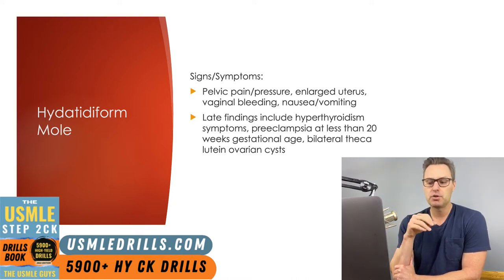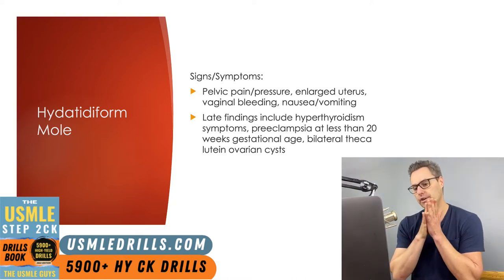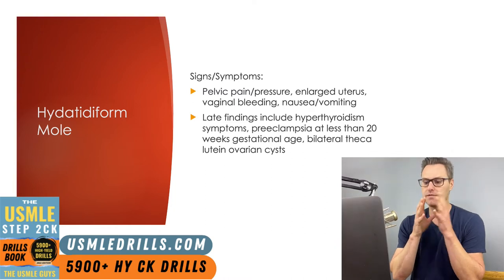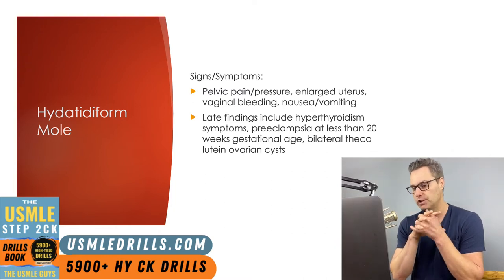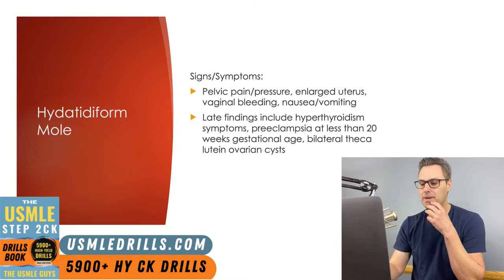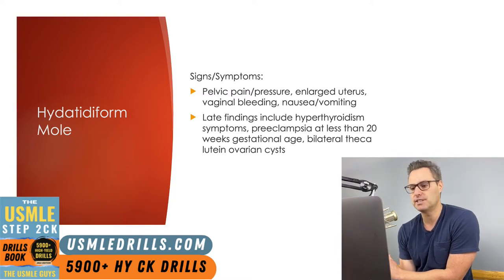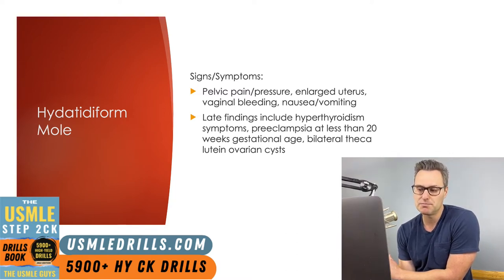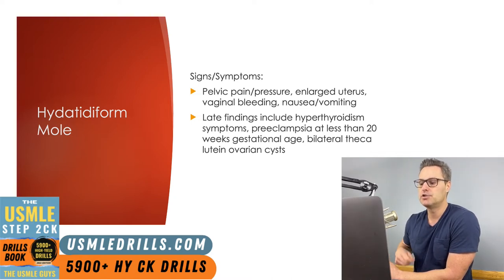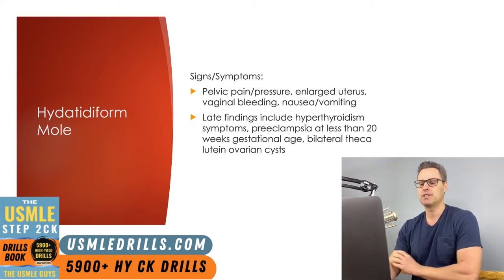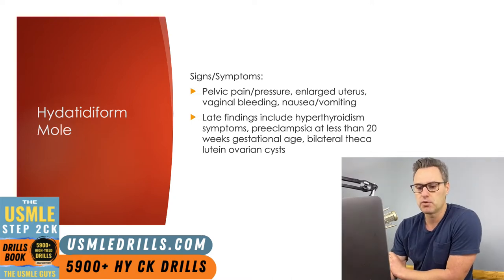Bilateral thecalutein ovarian cysts arise because of hyperstimulation from these high beta-HCG levels. Additionally, preeclampsia usually occurs after 34 weeks gestational age, so if you see preeclampsia before the 20th week of gestation, you should think about a complete molar pregnancy.